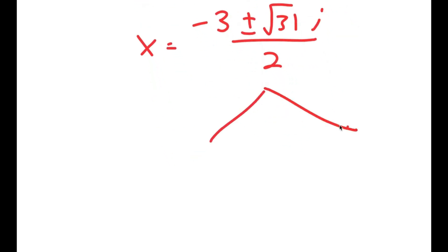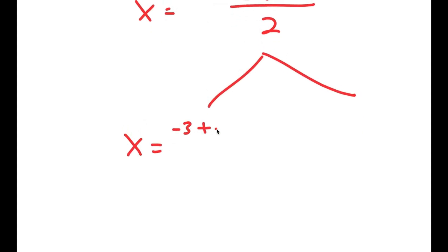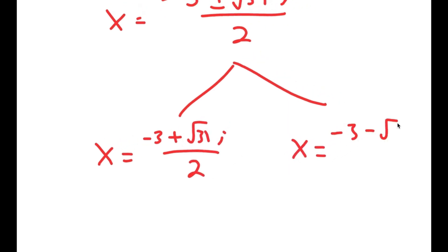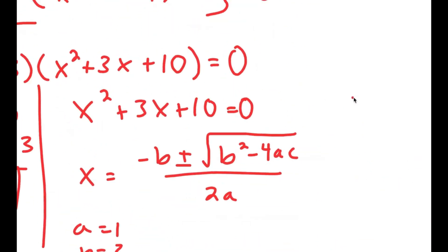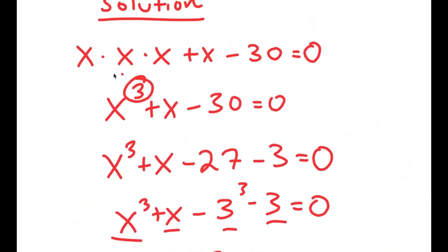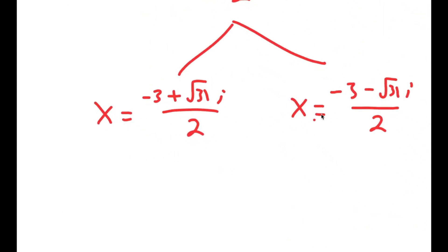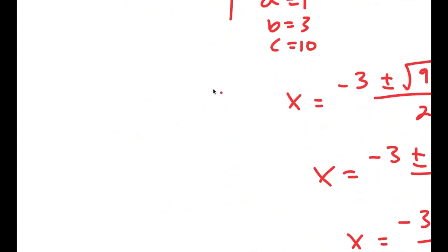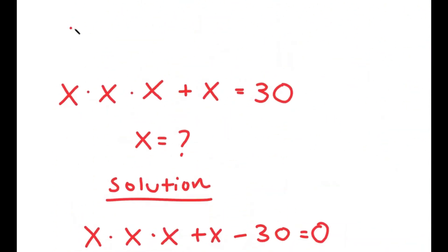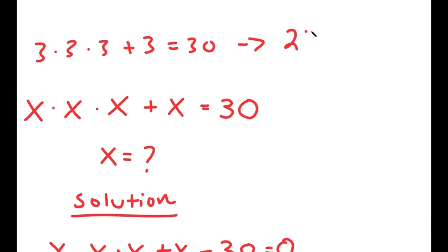This gives us two solutions: x is equal to negative 3 plus the square root of 31 times i over 2, and x is equal to negative 3 minus the square root of 31 times i over 2. Going back to the original equation x times x times x plus x minus 30 equals 0, these two are complex solutions, so they are not real solutions. But we can check x equals 3: plugging in 3, we get 3 times 3 times 3 plus 3 is equal to 30, which turns into 27 plus 3 is equal to 30. And I get 30 is equal to 30.